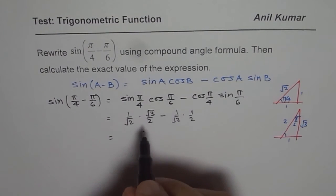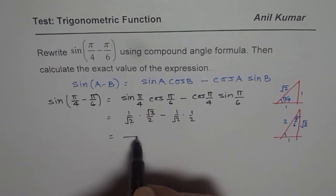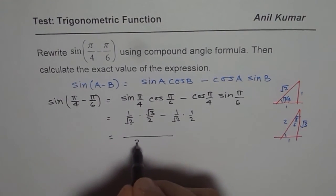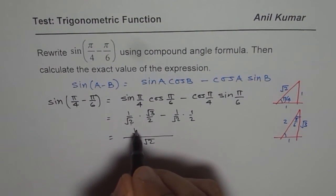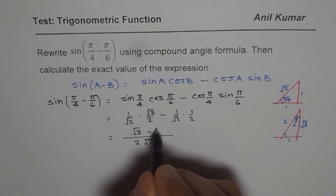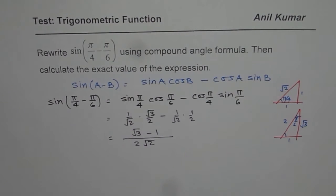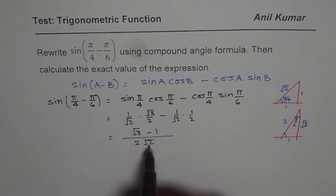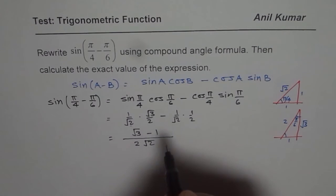So that gives us common denominator of 2√2, and the numerator is √3 minus 1. Now if you leave the answer at this stage, you might lose some marks, since normally we do not leave answer with radical sign in the denominator. So we need to rationalize at this stage.